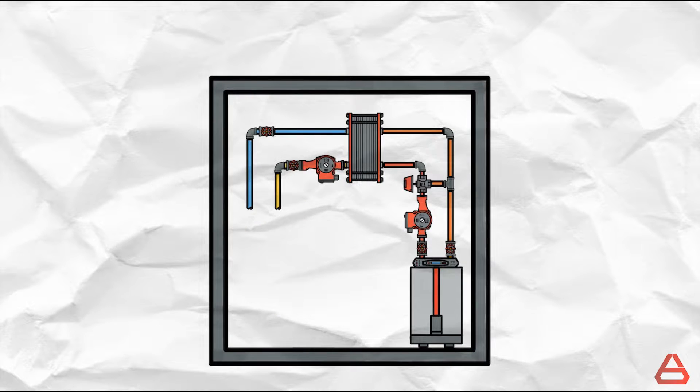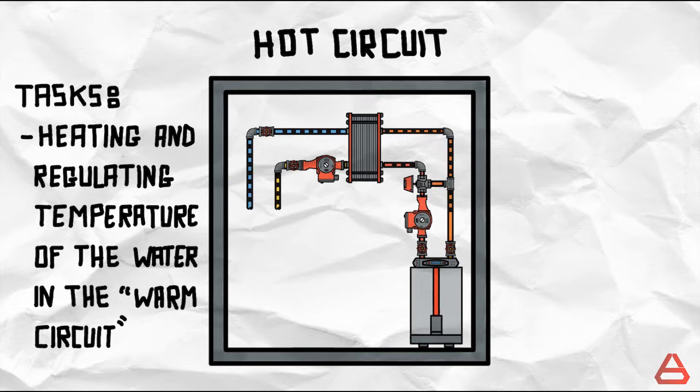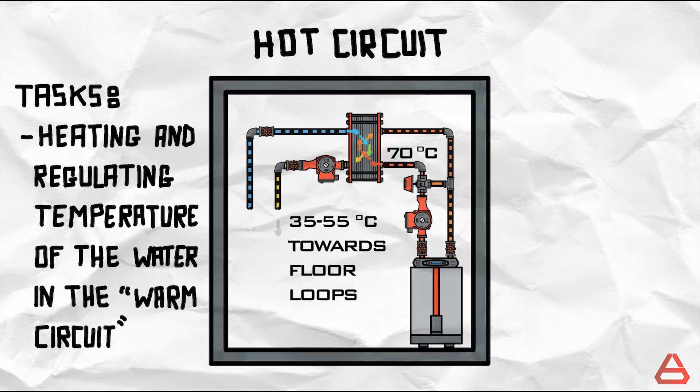The second circuit is a temperature regulating circuit which I refer to as the hot circuit. It is the part of the system responsible for heating and regulating the temperature of the water in the warm circuit. It produces water at high temperatures and exchanges its heat with the warm circuit in a controlled manner to maintain a temperature between 35 and 55 degrees celsius. I'll explain why shortly but for now let's begin with the warm circuit.